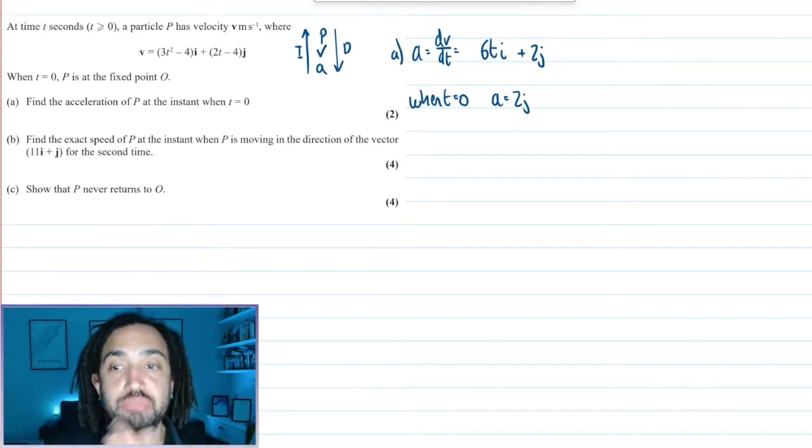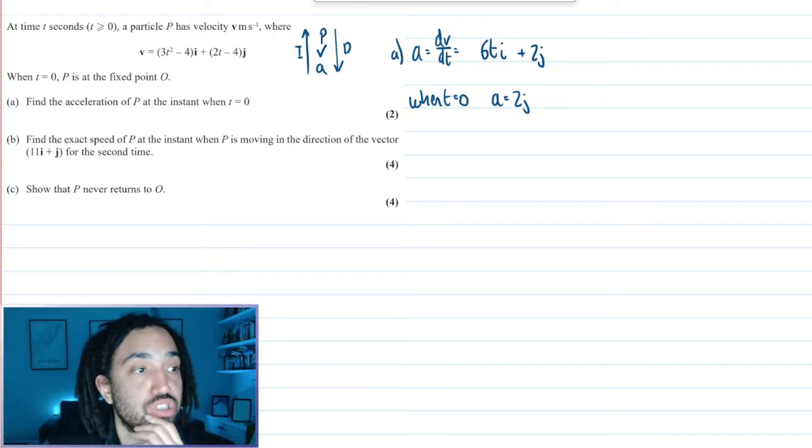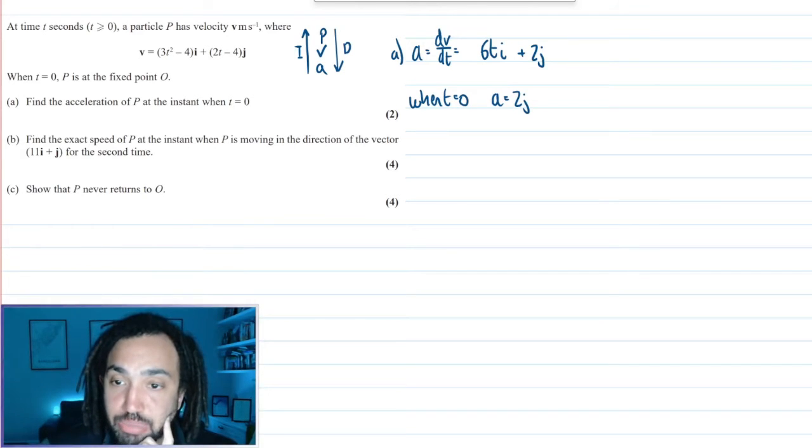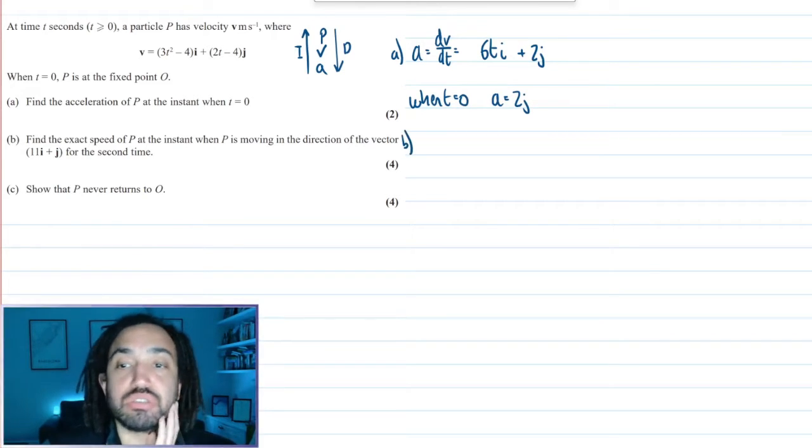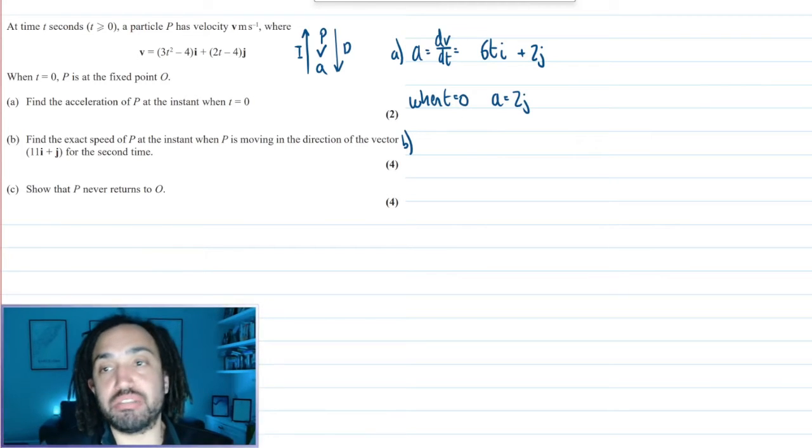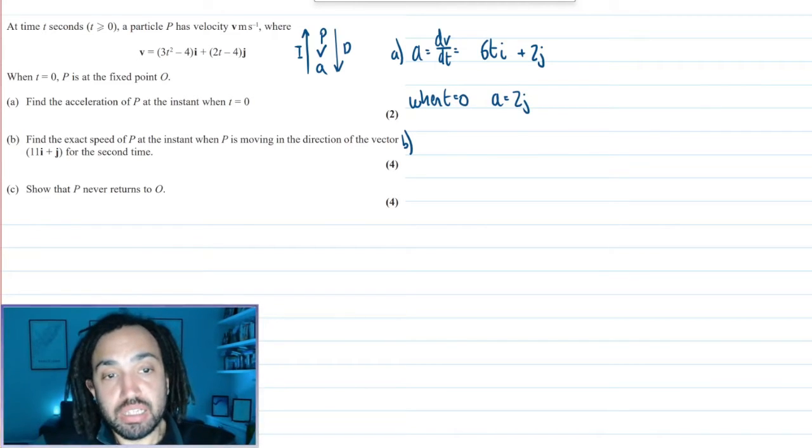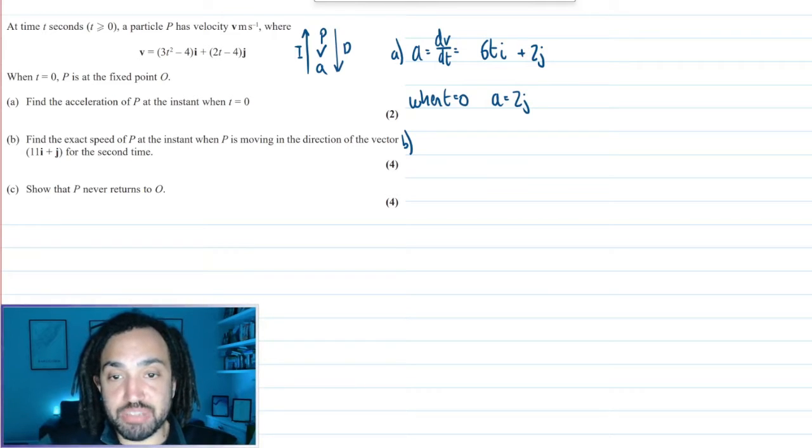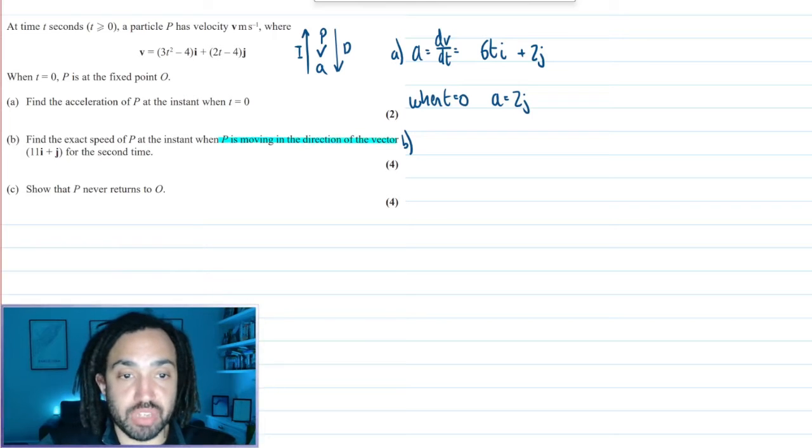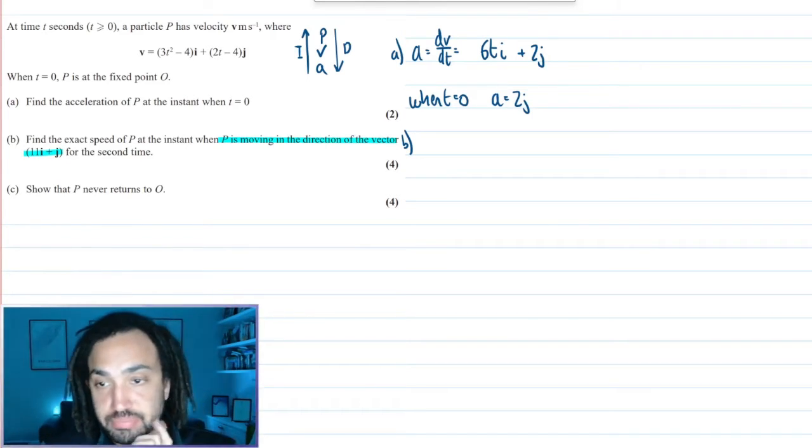Lovely, that is part a, not too much problem there. Now part b, I've chosen this question because so many people make a mistake here. It says find the exact speed of p at the instant when p is moving in the direction of the vector 11i plus j for the second time.